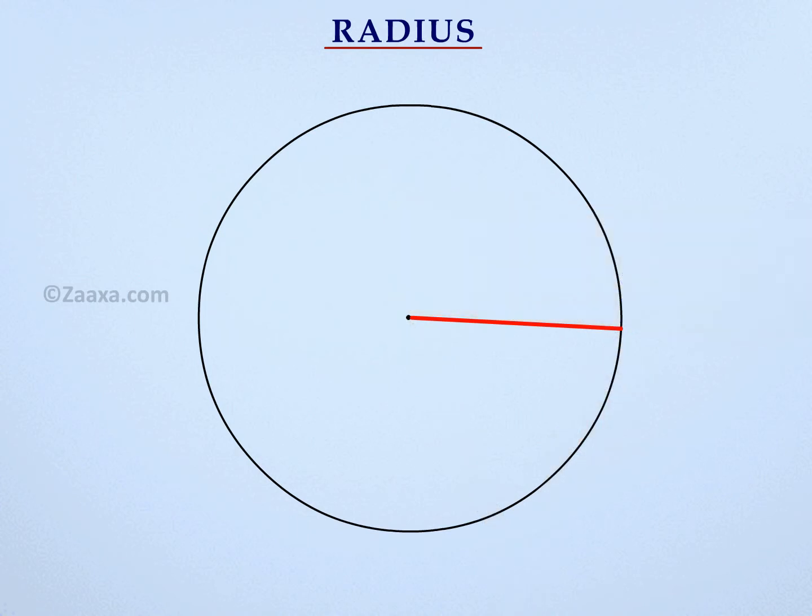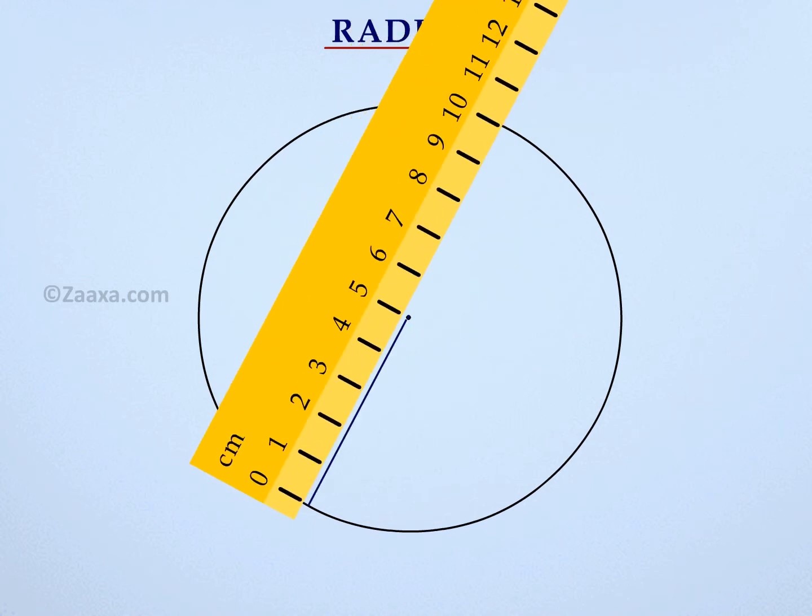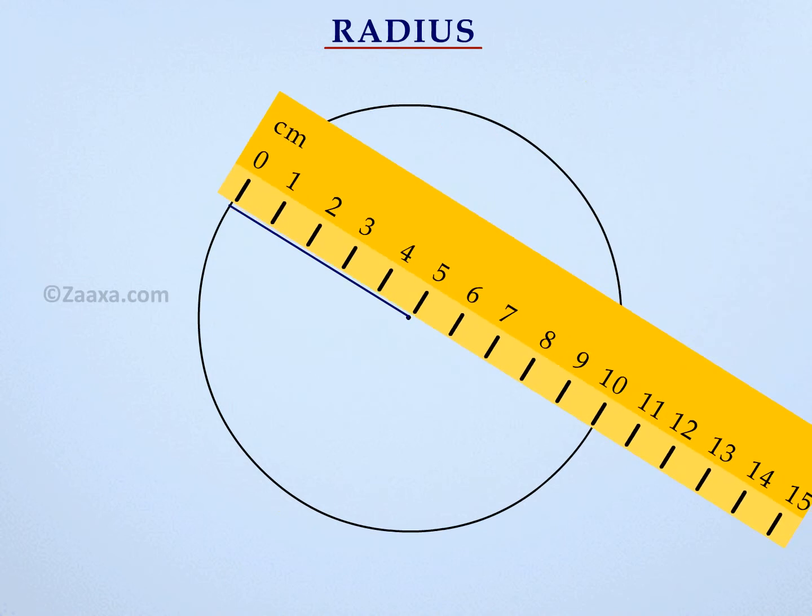If you measure the distance between the center of the circle and any point on the circle, you will notice it is exactly 5 cm.